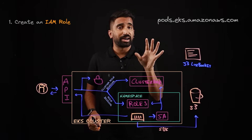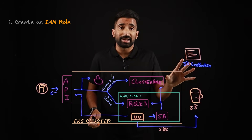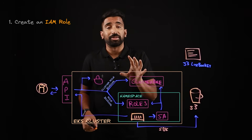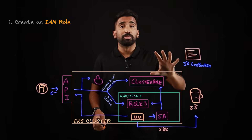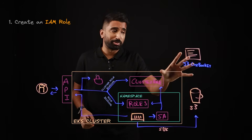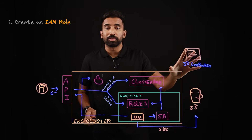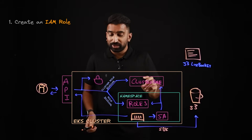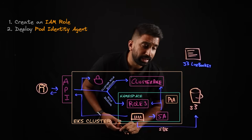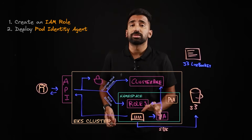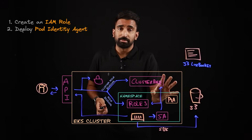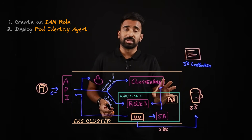This is one of the big improvements over IAM roles for service accounts. EKS pod identity allows you to not have to create an OIDC provider for every cluster, so these roles can really be scoped to multiple clusters. You also have attribute-based access control, which makes these roles that much more powerful. The next thing we'll need to do is deploy the pod identity agent — or PIA — which can be installed using an EKS add-on, making that operational overhead really negligible. It helps you manage that agent running in your cluster.